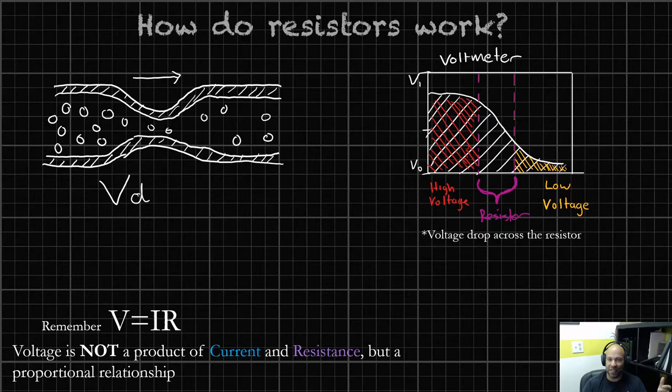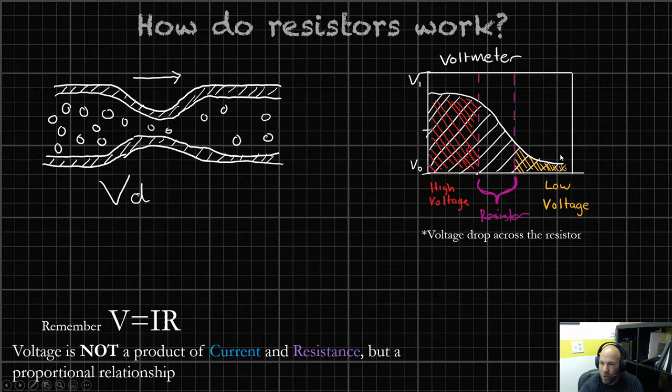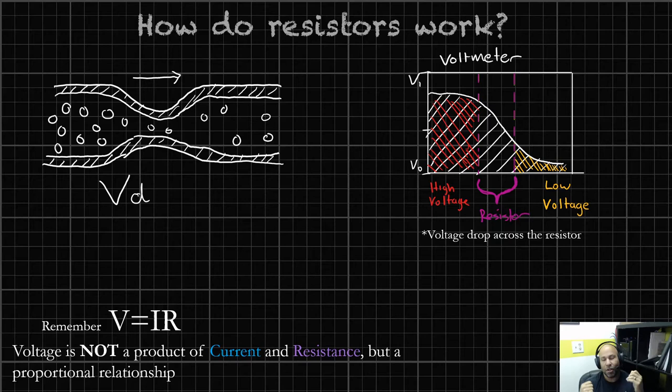This kind of goes in with Ohm's Law. Voltage is equal to current times resistance. I want to point out that voltage is not a product of current and resistance, but a proportional relationship. So if we lessen one or increase one, we're going to manipulate the other. And that's exactly why we use resistors.